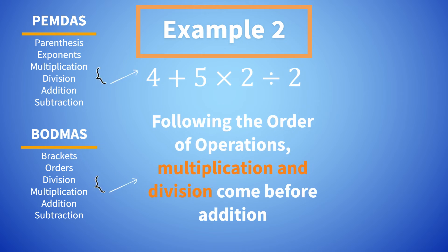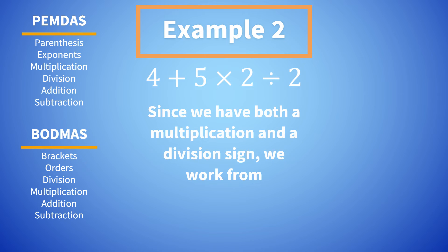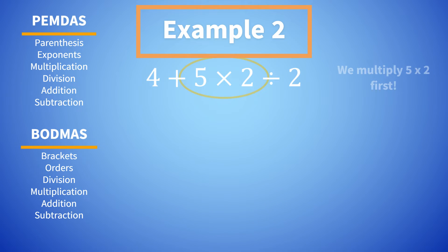Following the order of operations, multiplication and division come before addition. Since we have both a multiplication sign and a division sign, we work from left to right. That means we multiply five times two first.